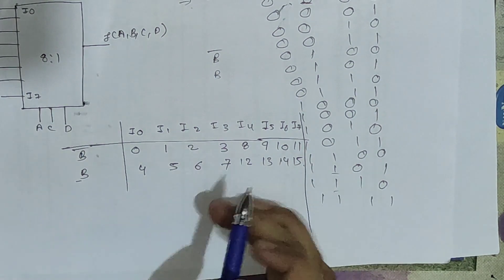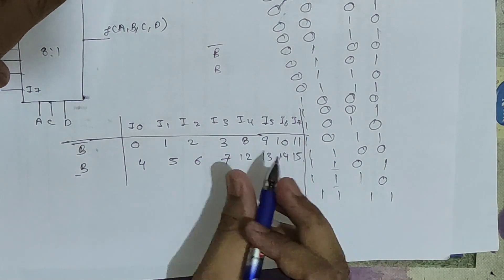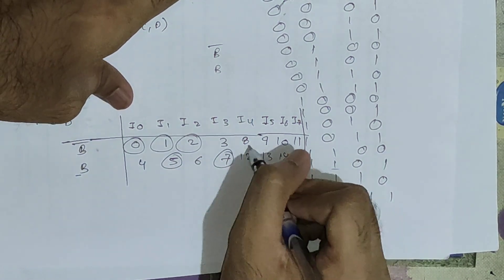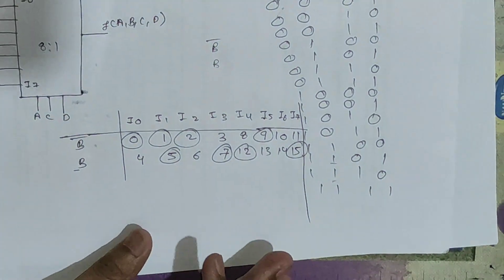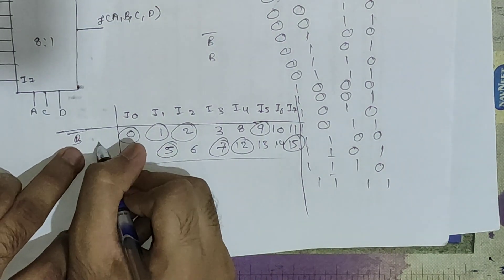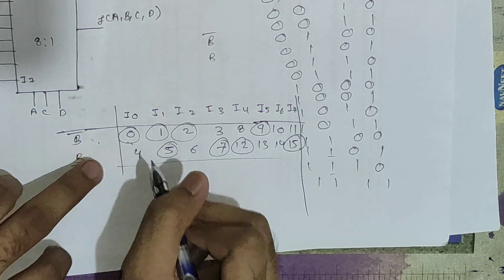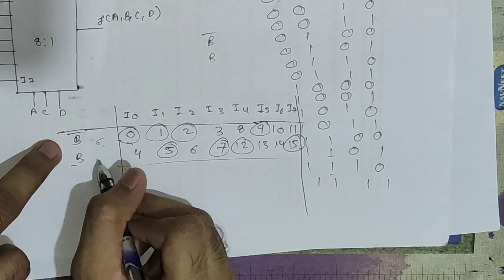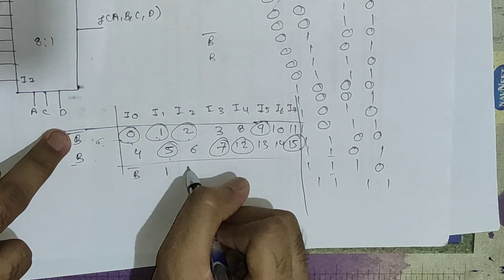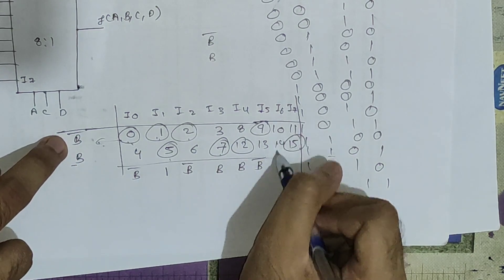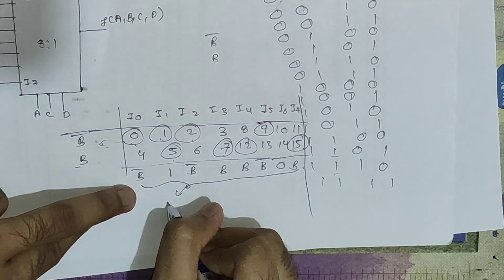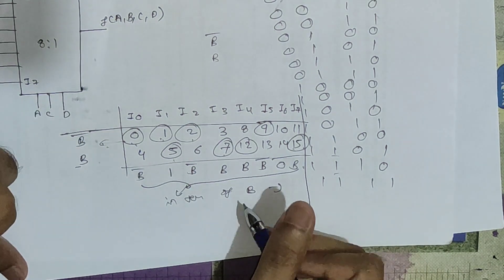Now we circle the minterms that need to be implemented: 0, 1, 2, 5, 7, 9, 12, 15. For each input line we check which section (B-bar or B) the circled minterms fall into. Result: i0 = B-bar (minterm 0), i1 = B+B-bar = 1 (minterms 1 and 2), i2 = B (minterm 5), i3 = B (minterm 7), i4 = B-bar (minterm 9), i5 = 0 (no minterms), i6 = B (minterm 12), i7 = B-bar (minterm 15). These are the input values in terms of b to be given at the input lines.